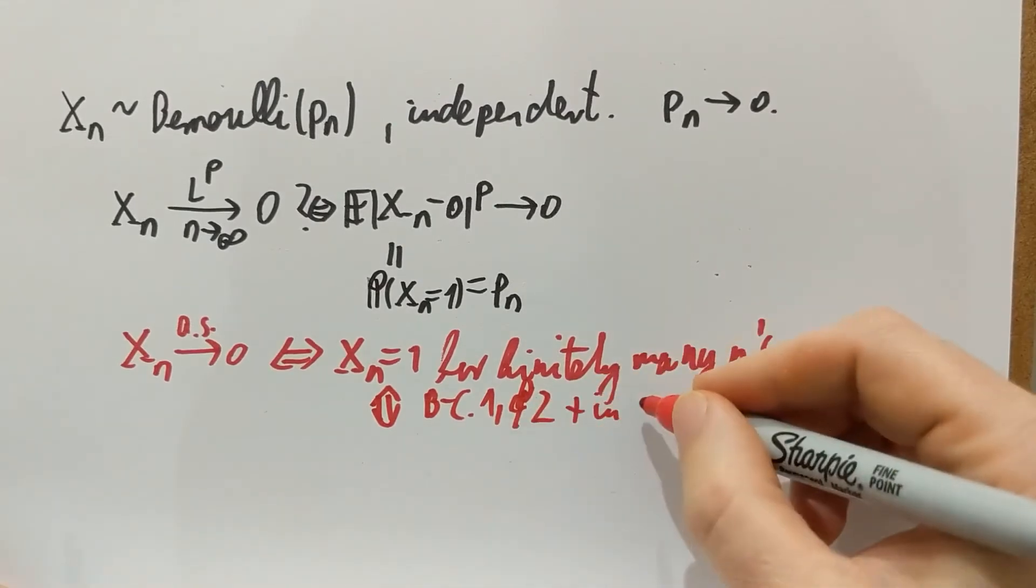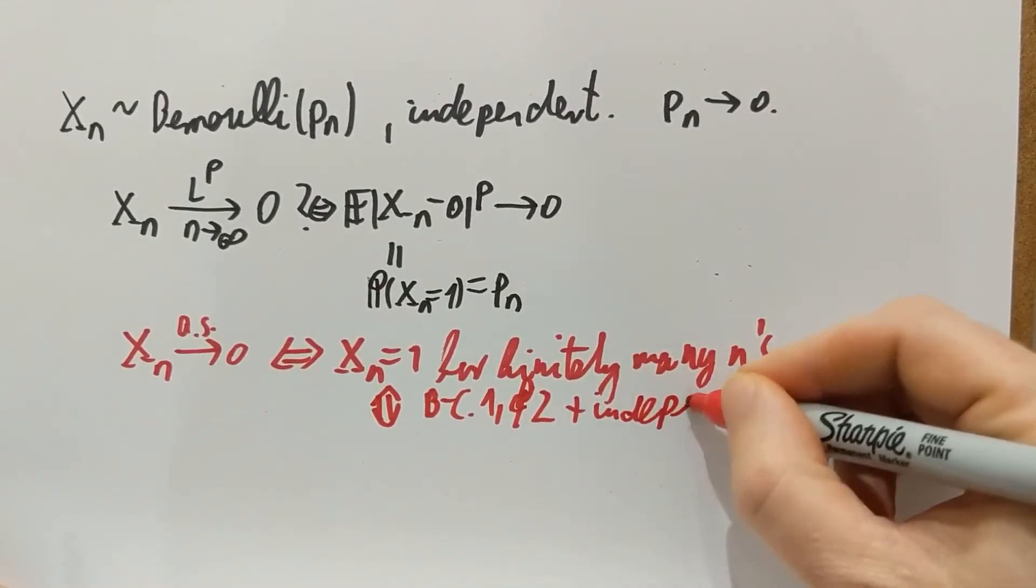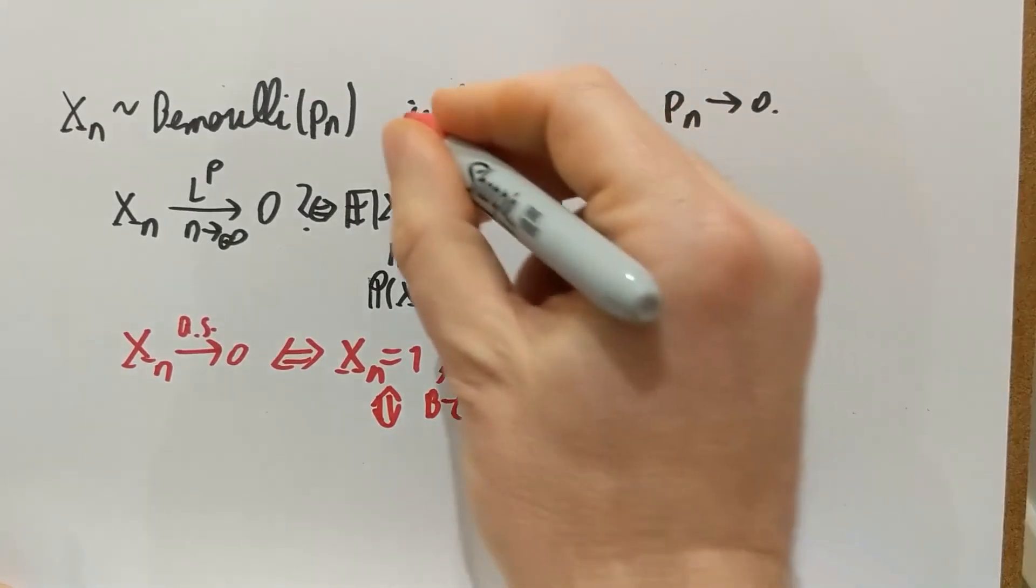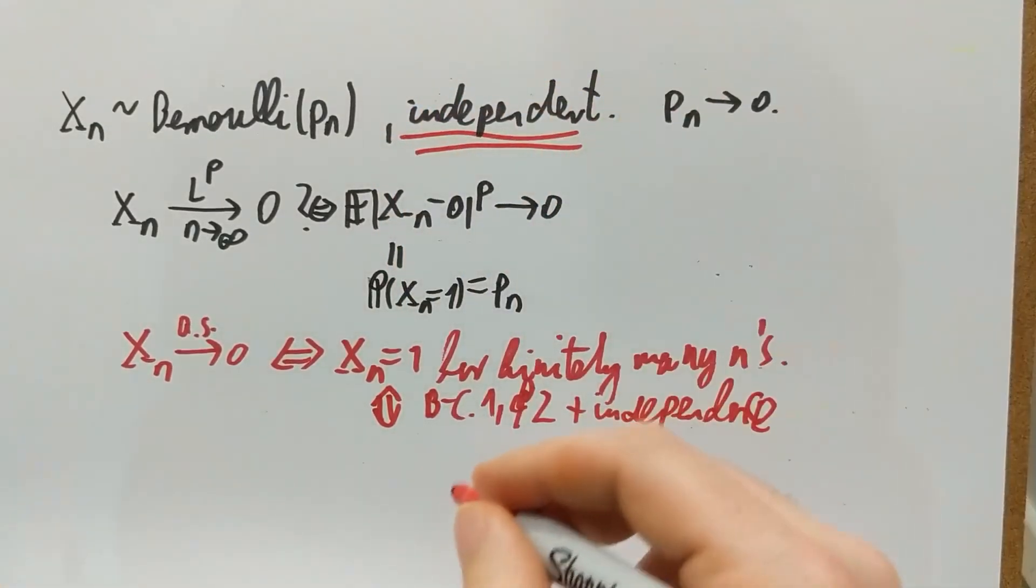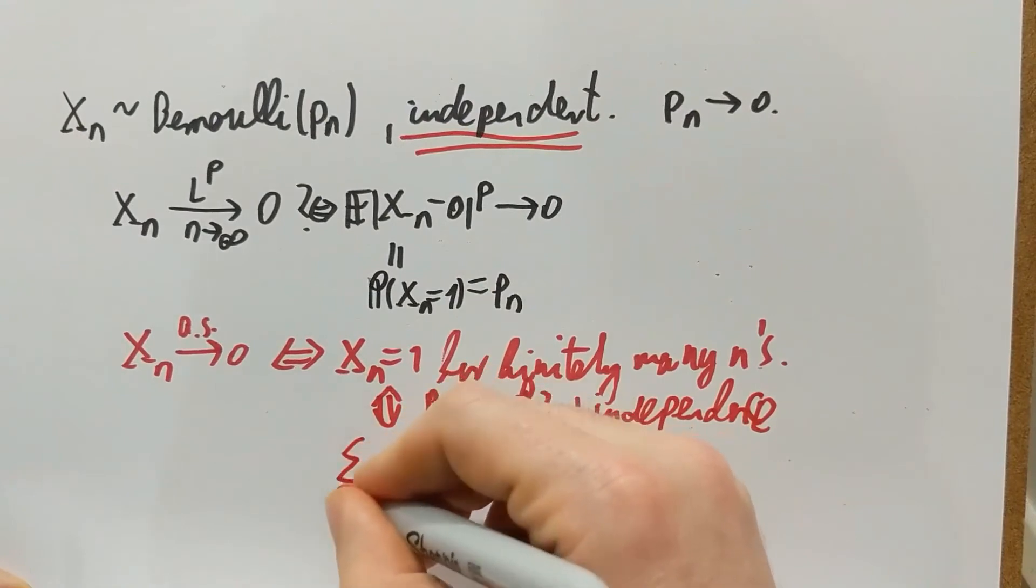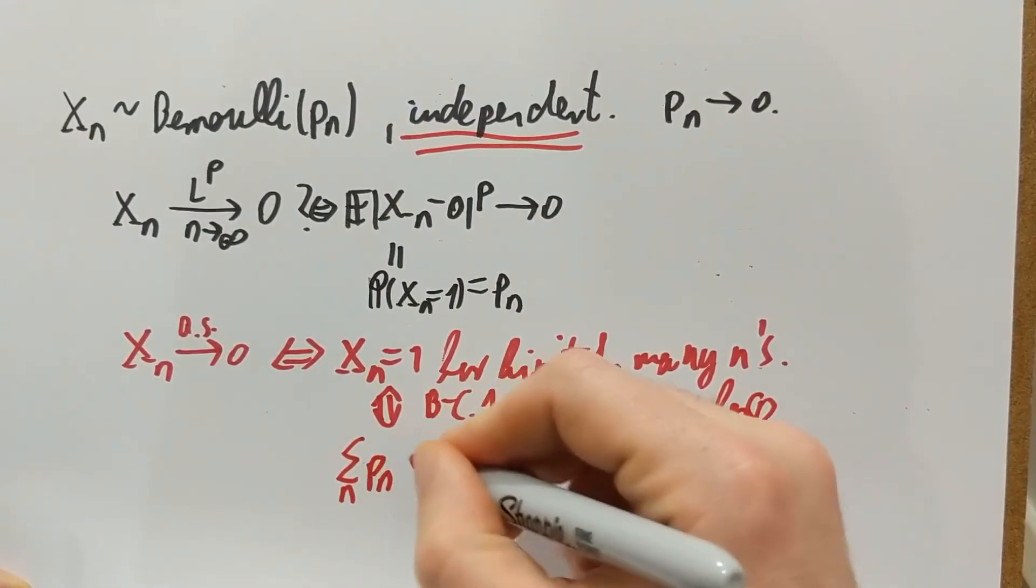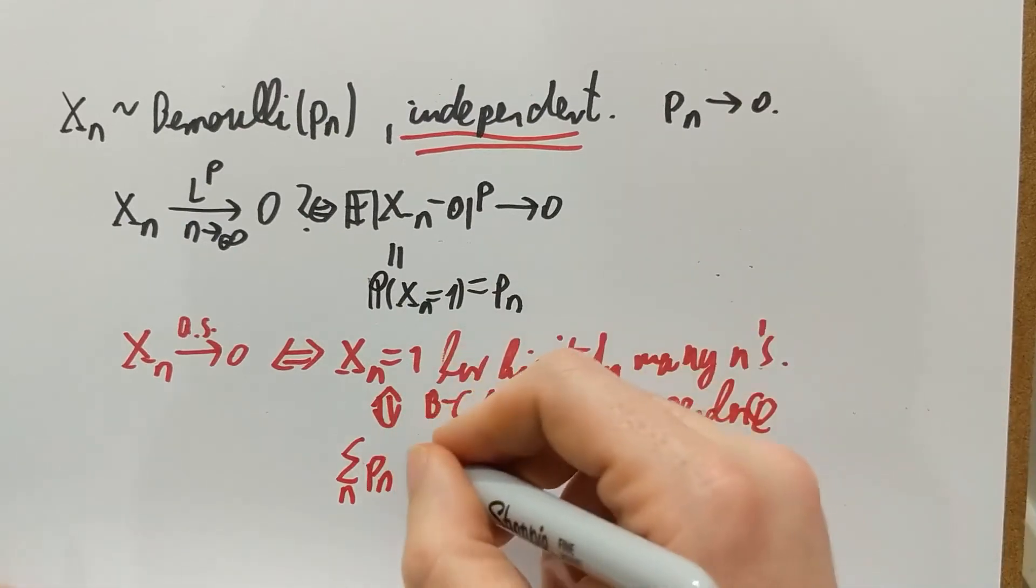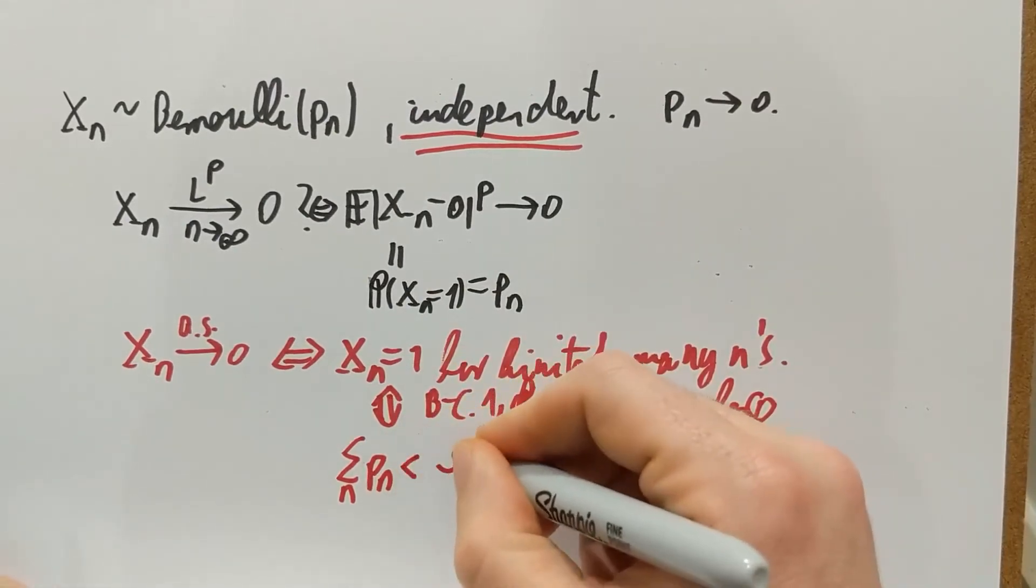So it's quite important here that we have independence. Therefore this is equivalent to the sum of the Pn. So we want finitely many Xn's to be one, which means that this should be summable.